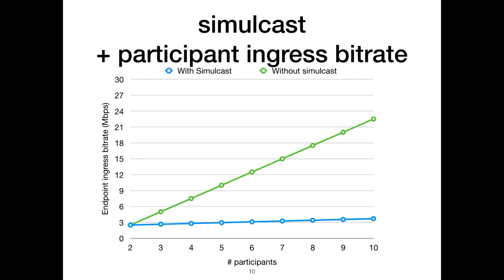Simulcast alone, without any congestion control in the bridge, has a very big impact on both infrastructure data transfer and user experience. In our specific case, without simulcast endpoints receive 2.5 Mbps per participant, whereas with simulcast endpoints receive 2.5 Mbps just for the on-stage participant and 150 kbps for thumbnail participants. In this graph we see that the amount of data a specific participant receives grows linearly as the number of participants grows — but when simulcast is enabled, the growth rate is much smaller and depends on the lowest quality resolution stream.